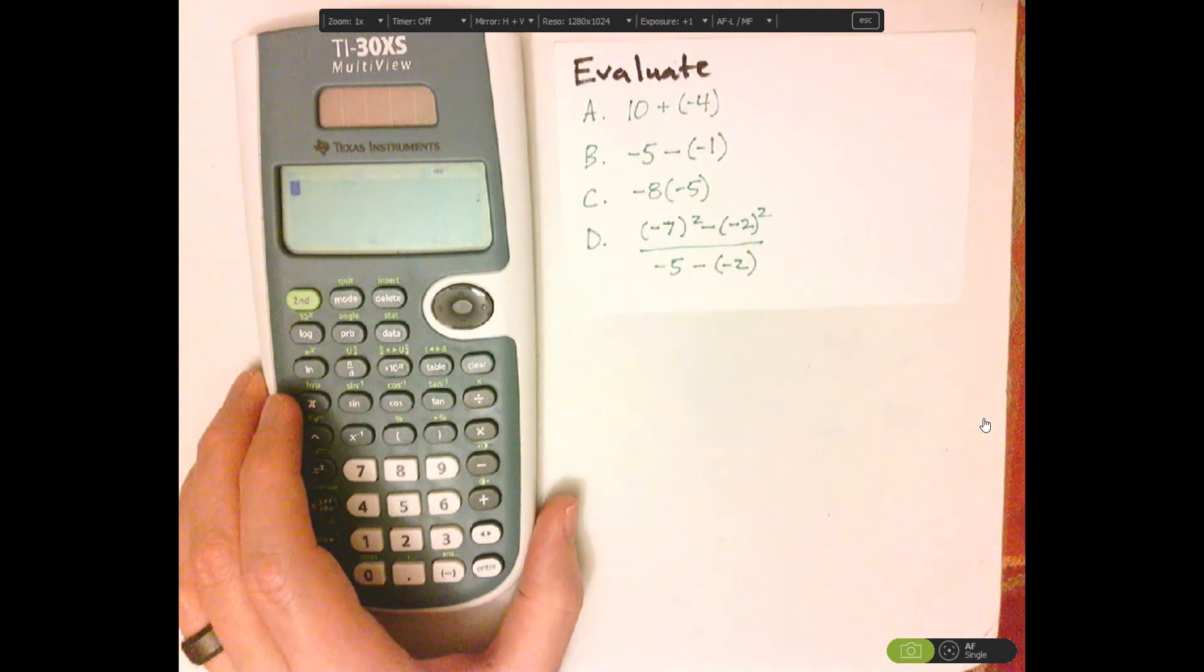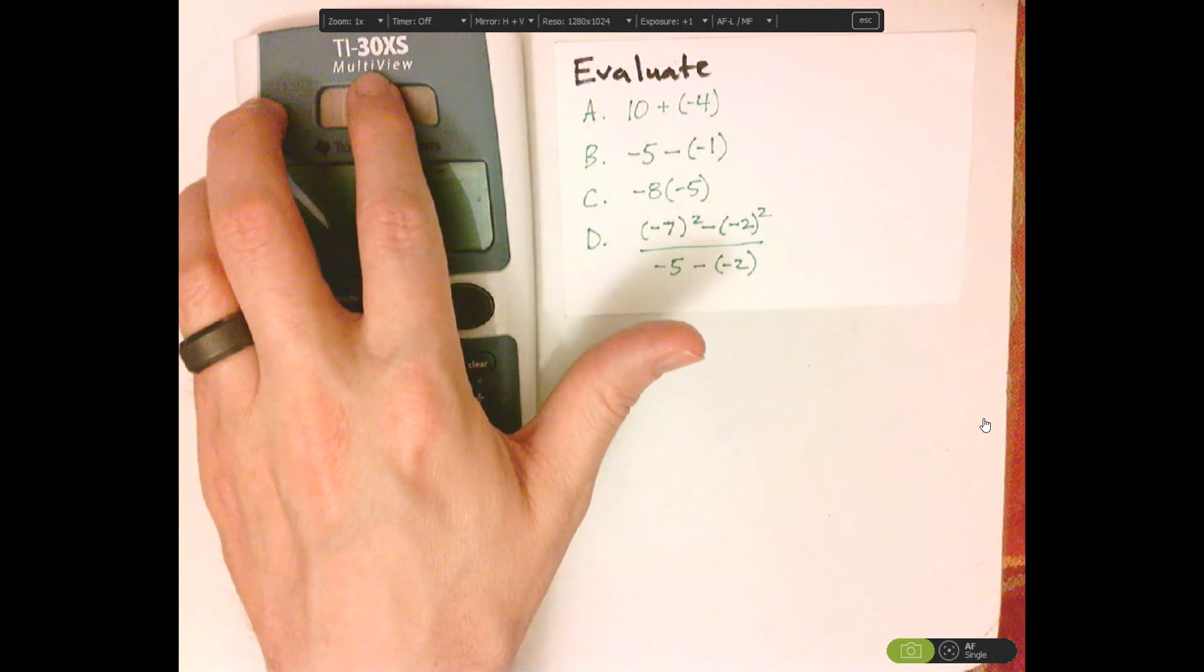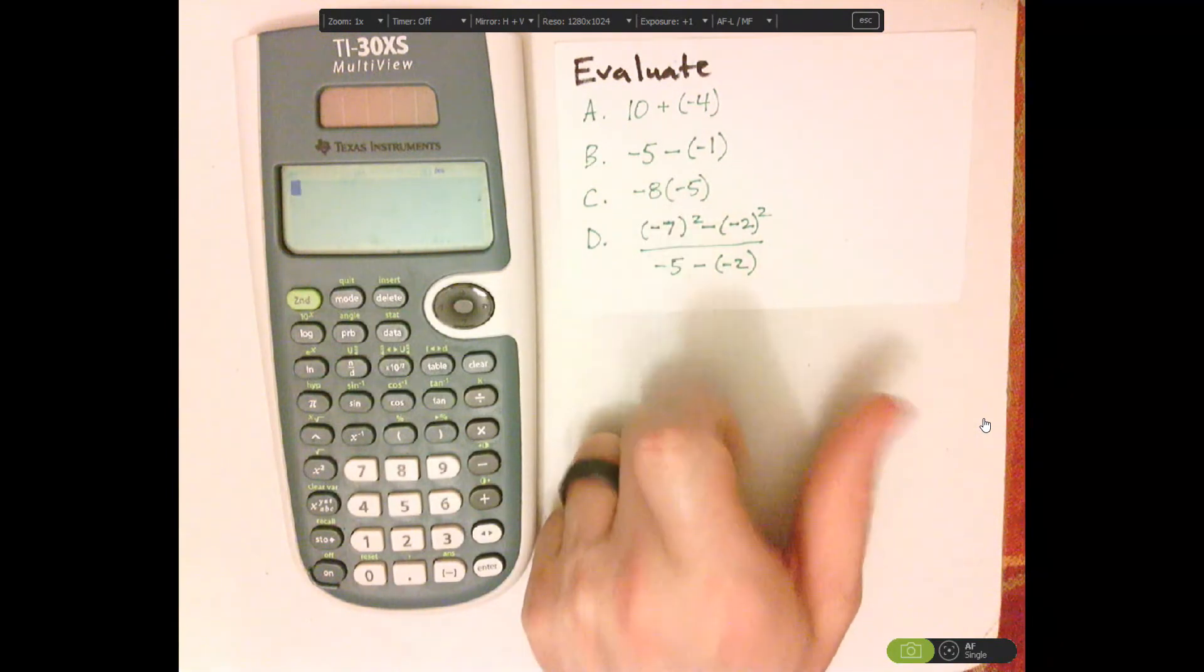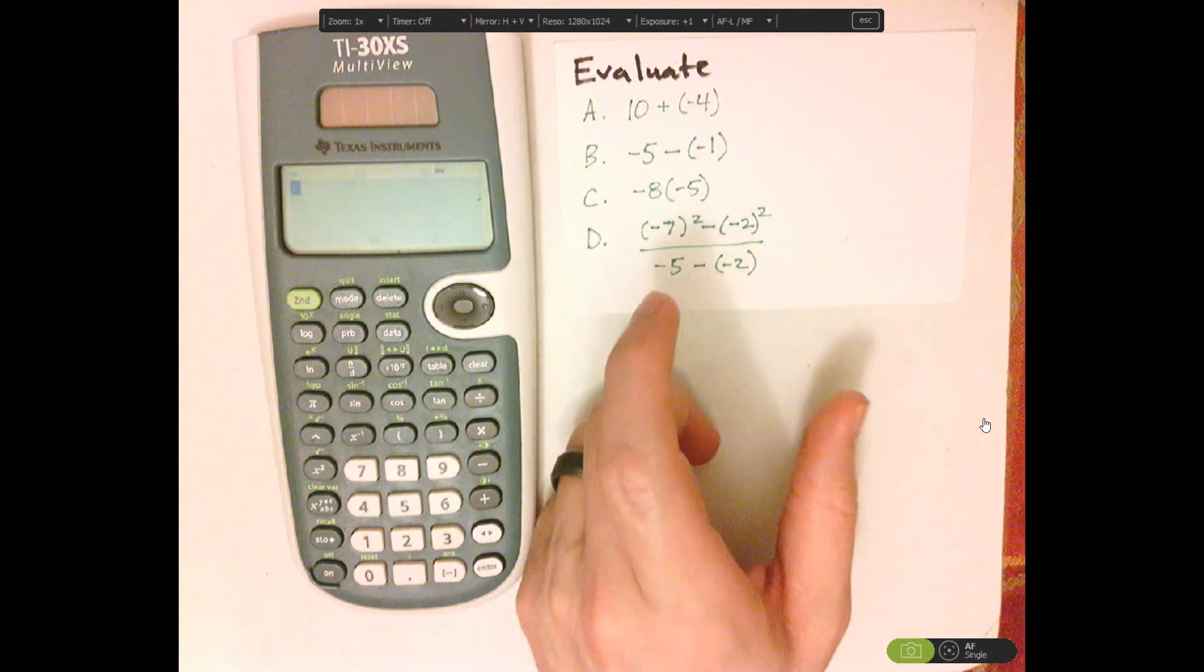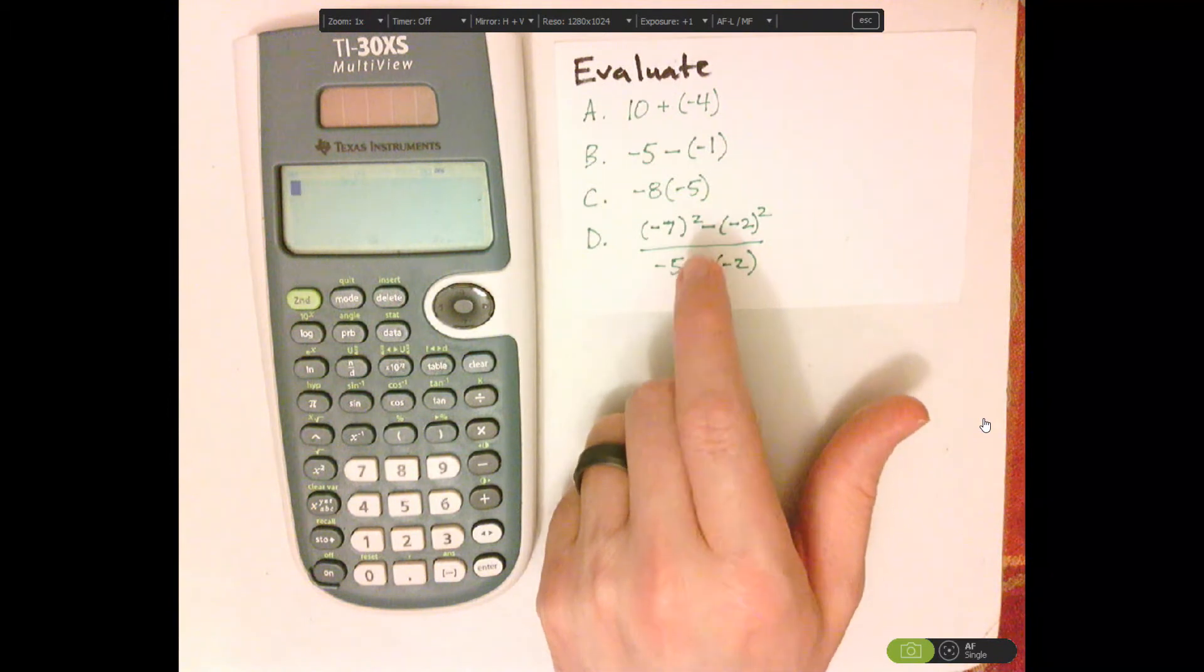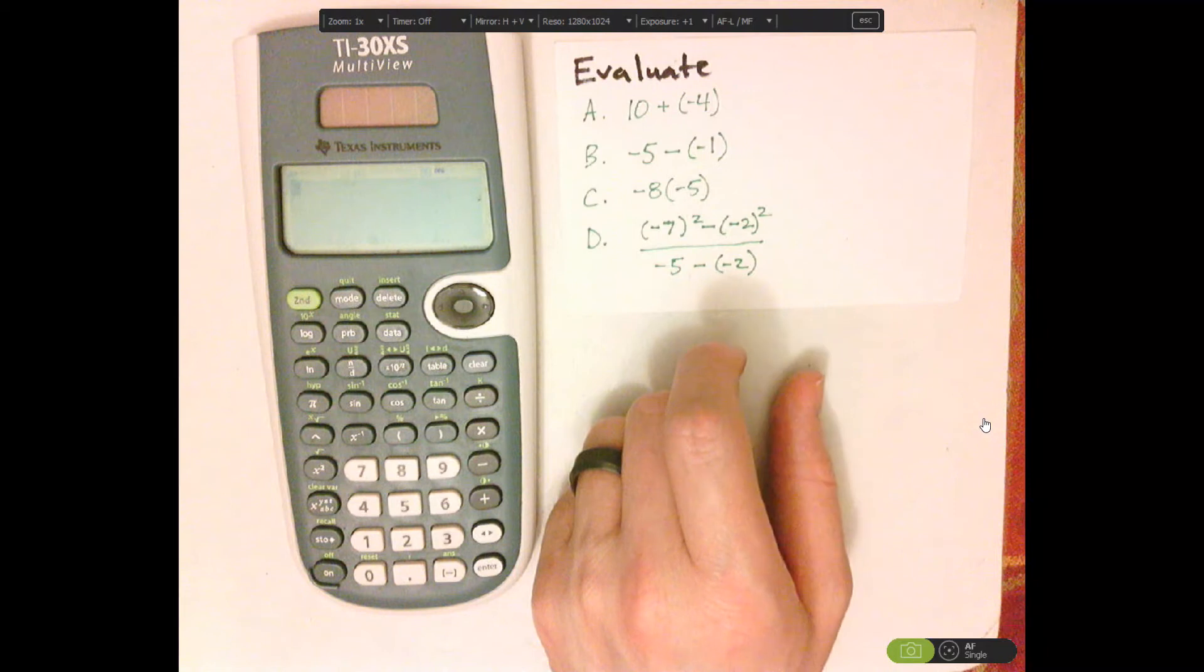Hi, I'm JD, and what we're going to be doing today is using the TI-30 XS multi-view calculator. We're going to do problems with integers, or expressions with integers, and we're also going to consider the use of parentheses and the negative sign with these problems. All right, so let's do that first one.